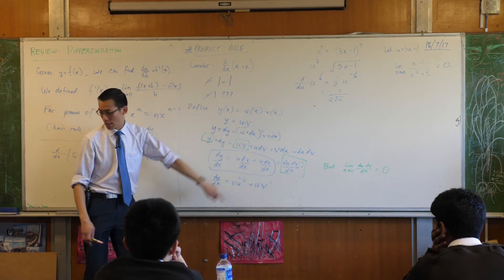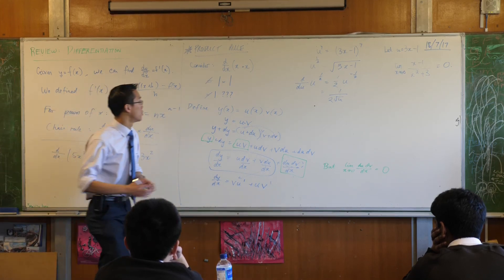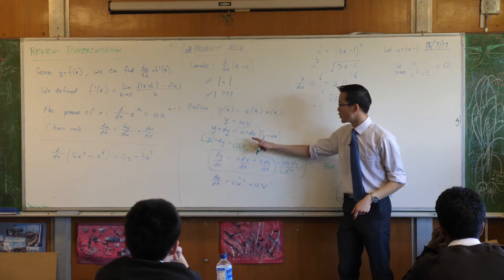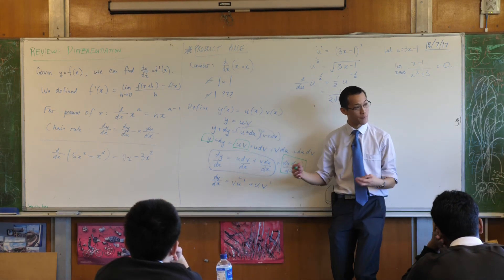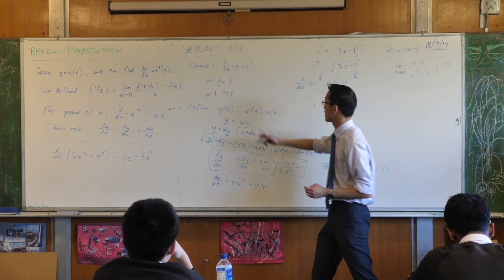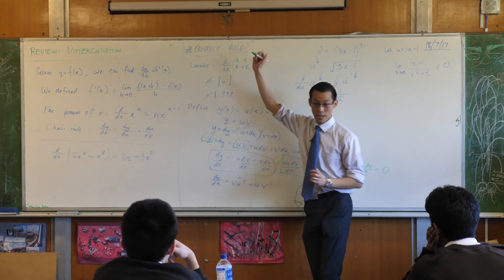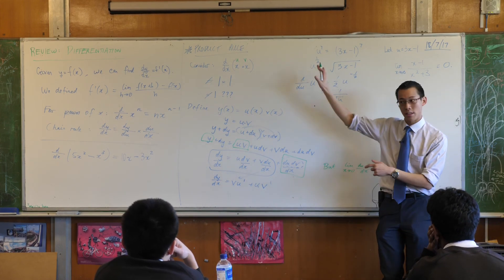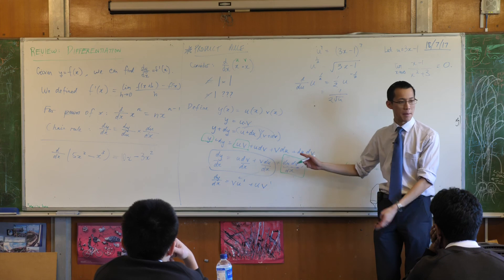See what happens if we actually do give it a go with our original example. You define your two pieces or your factors of your product as u and v. In fact, I usually write u and v over the top of my two things, just so I know which one is which. Not that it matters, it's symmetrical.